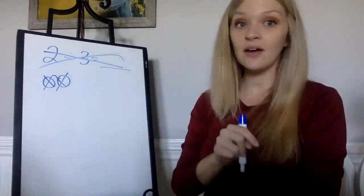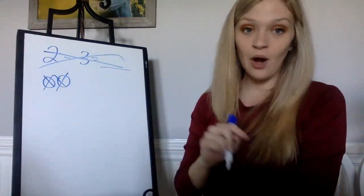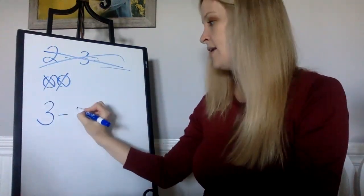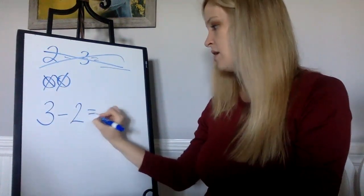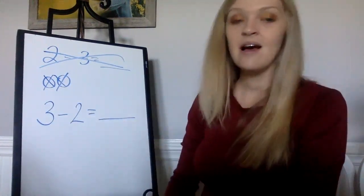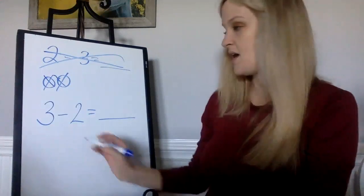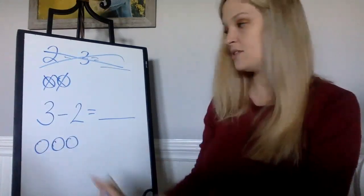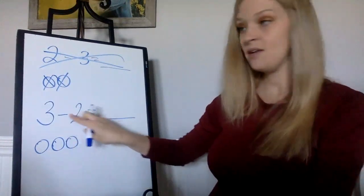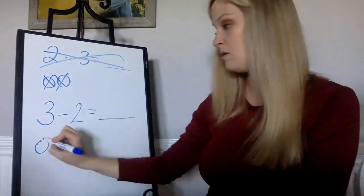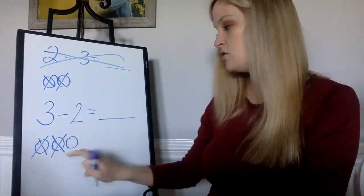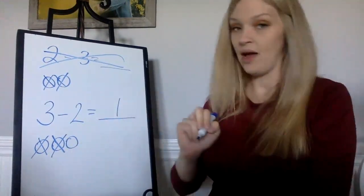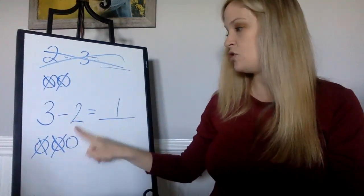So I would say that is not correct. The bigger number always has to come first, so then it would be 3 minus 2 equals blank, and then now I can solve it. I could do one, two, three circles minus, I'm taking away how many? Two: one, two. And how many do I have left? One. So 3 minus 2 equals 1.